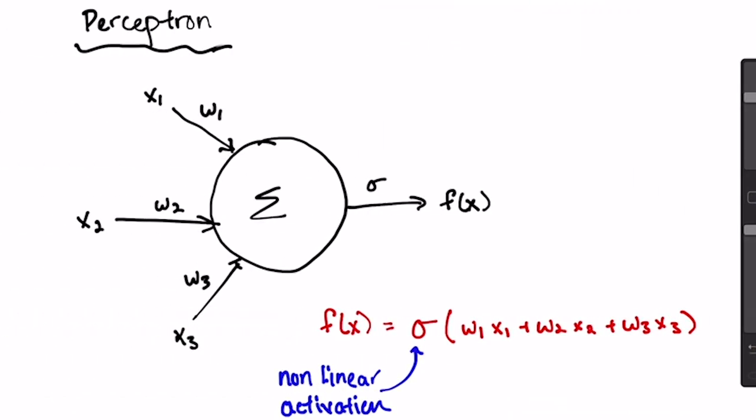As we've talked about in other videos, when neural networks were first being developed, researchers took a lot of inspiration from neurons. Perceptrons, the main unit of neural networks, were designed to weight a bunch of different inputs, and then sum them and apply a nonlinear activation function to see what kind of output the perceptron gave. However, neurons and perceptrons aren't actually that similar, and neurons can perform much more complex computations using simpler architectures than neural networks can.